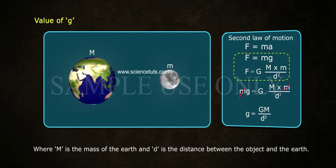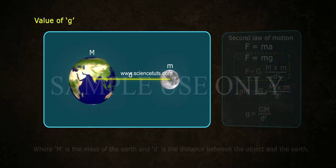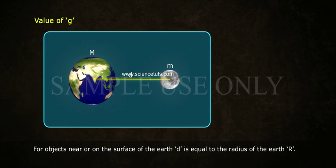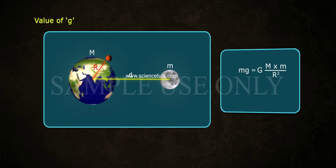Where M is the mass of the earth and d is the distance between the object and the earth. For objects near or on the surface of the earth, d is equal to the radius of the earth, r. mg equals G times M times m by r². Or, g equals GM by r².